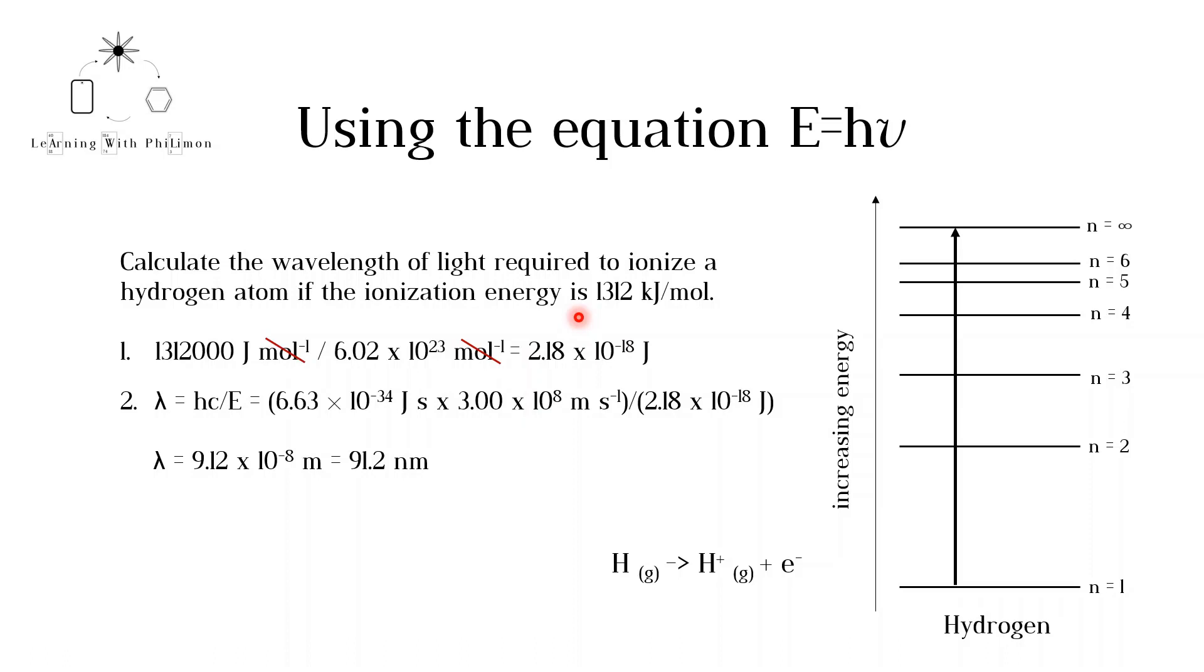Rearranging Planck's equation so that wavelength is the subject, we get lambda is equal to hc divided by E. Substituting in the values, we get the following calculation. Note that the speed of light in a vacuum is a constant and is found in the data booklet.